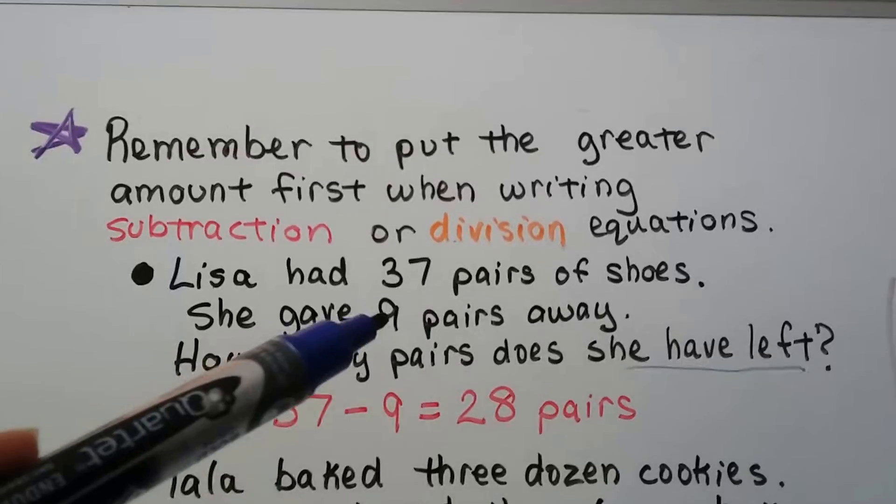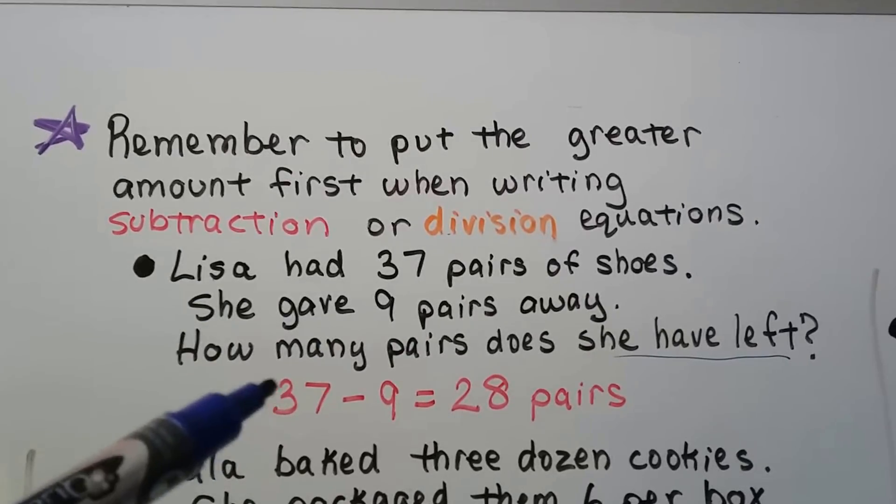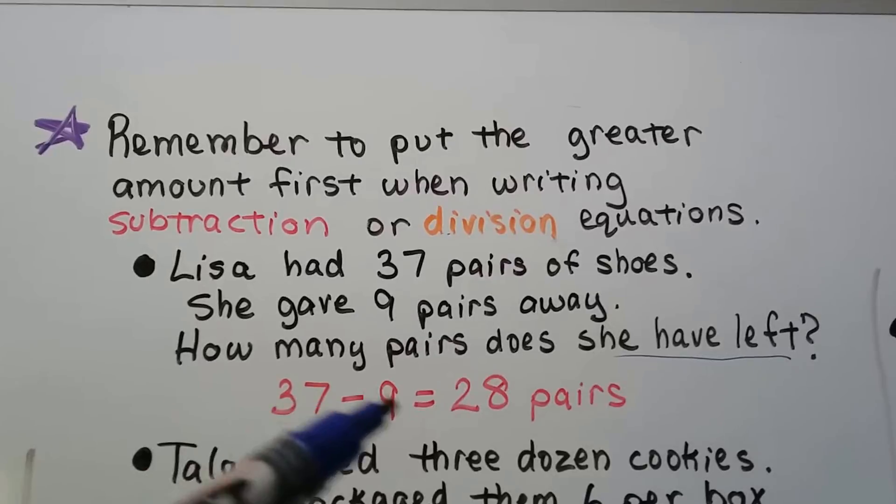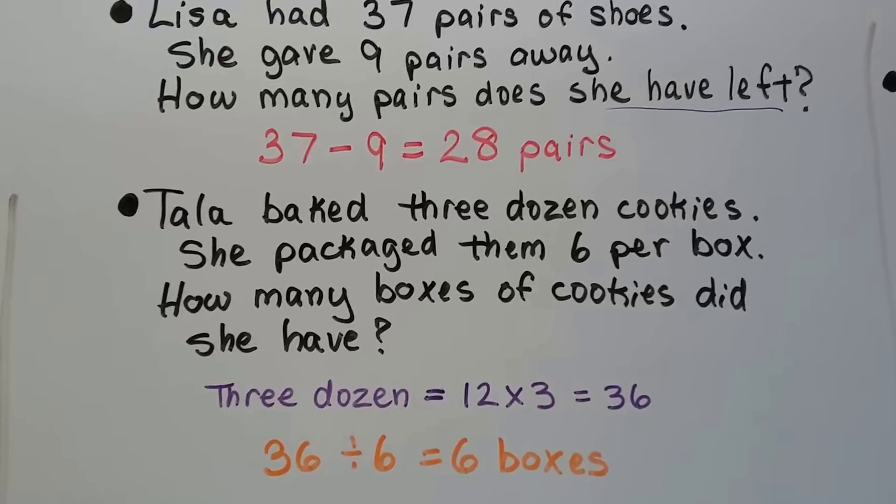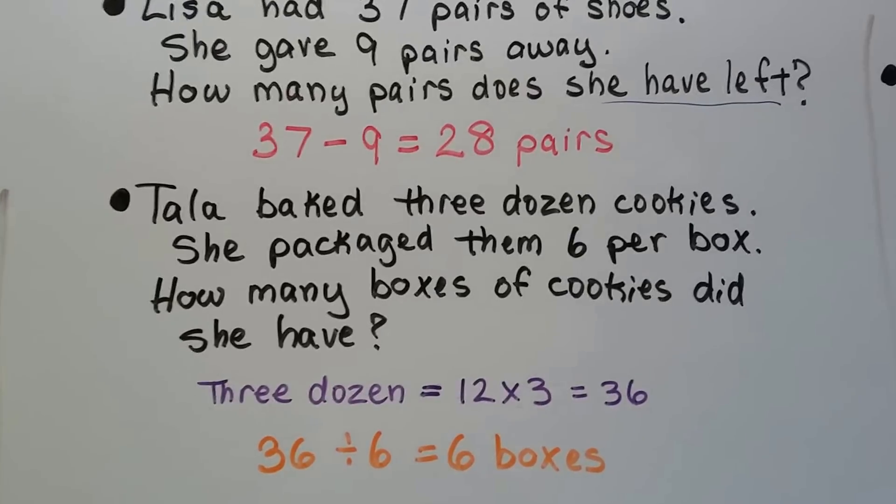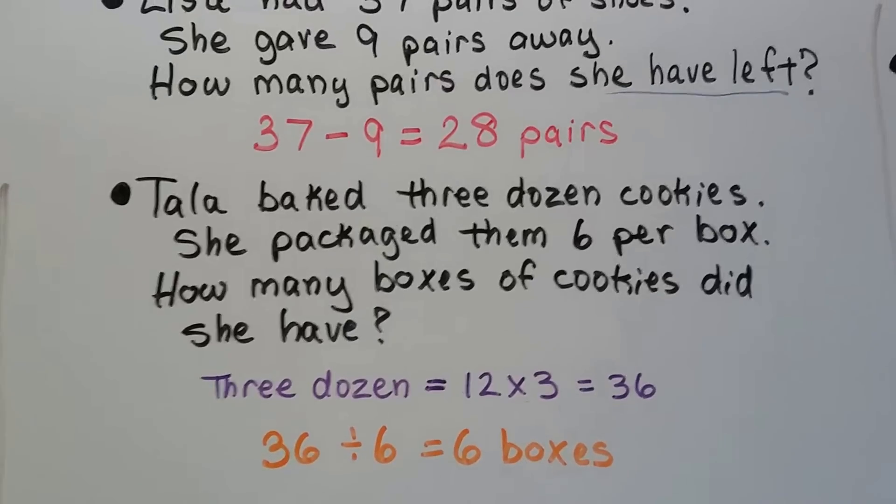We're not going to do nine minus 37. We're going to put the greater number first in the equation: 37 minus nine. Then we have this one. Tala baked three dozen cookies and she packaged them six per box. How many boxes of cookies did she have?